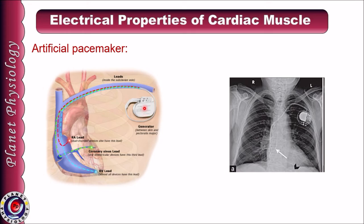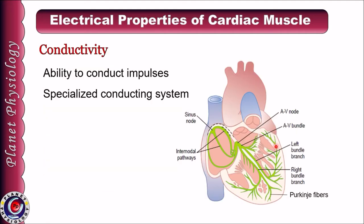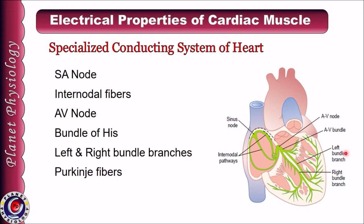An artificial pacemaker is a battery-operated device which stimulates the heart at a specific rate via electrodes. As shown in the picture and the corresponding X-ray, the device is placed in the chest and the electrodes are passed through the subclavian vein into the right atrium as well as ventricle, where they stimulate the cardiac muscles to initiate the heartbeat. Coming to the last electrical property — conductivity — it is defined as the ability to conduct impulses from one point to the next. The cardiac muscle has a specialized conducting system that includes the SA node, internodal fibers, AV node, bundle of His, left and right bundle branches, and Purkinje fibers.